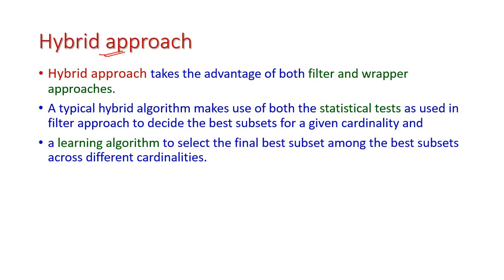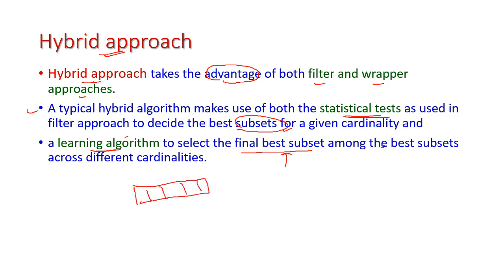The third one is the hybrid approach. The hybrid approach is the combination of the filter approach and the wrapper approach — it accepts all the advantages of both. The hybrid approach uses statistical tests for selecting the best subset, and it also has a learning algorithm for selecting the final best subset among the selected subset. By using the statistical test, we can select some subset of features from the dataset, and then the learning algorithm is also used to select the best among the selected subset.